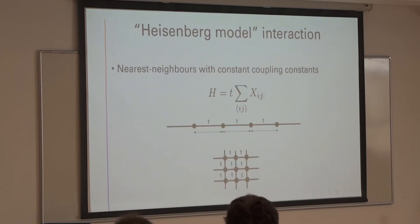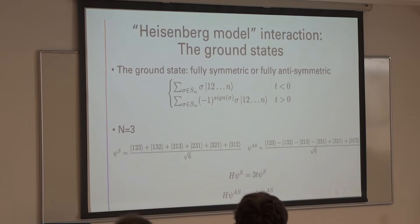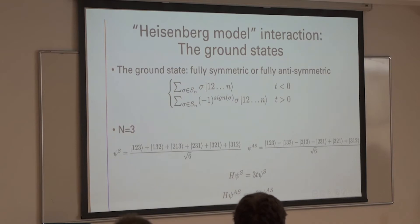The ground state of these kinds of systems is fully symmetric if t is negative and fully anti-symmetric if t is positive. These are the examples for N equals 3: this is a symmetric state, this is the anti-symmetric state. These states are the ground state of the system and it depends on the sign of t.